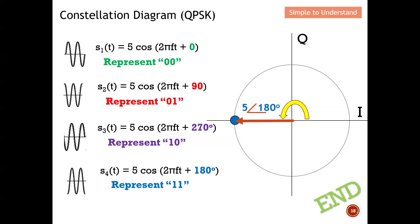In summary, the constellation diagram is primarily used for PSK, though it can still be used for ASK. For QPSK, the four points on the constellation diagram are at 0, 90, 180, and 270 degrees. By identifying the location of a point on the constellation diagram based on its phase, you can decode the intended transmitted message. This is how the constellation diagram works for digital modulation interpretation.